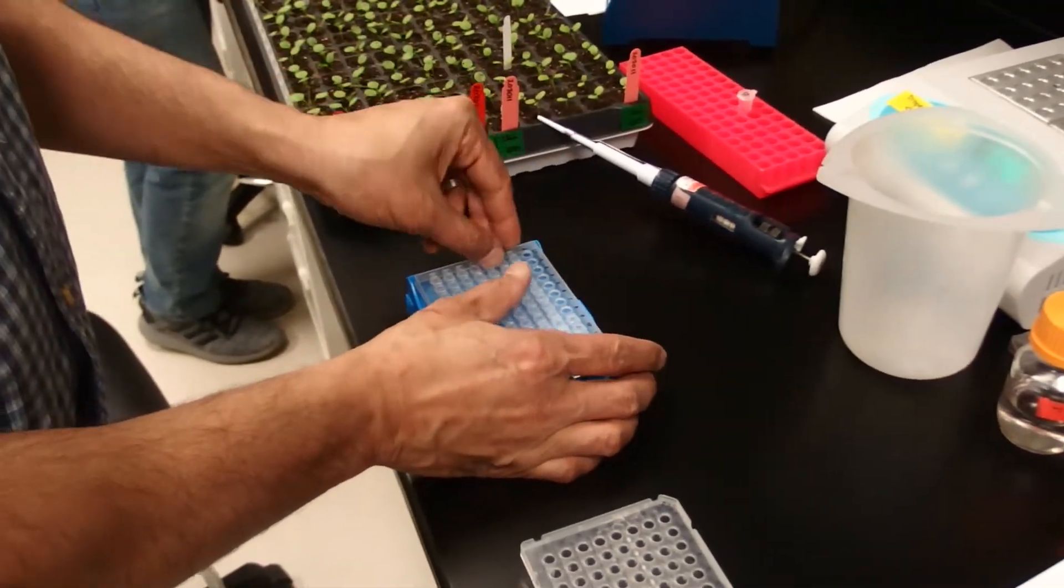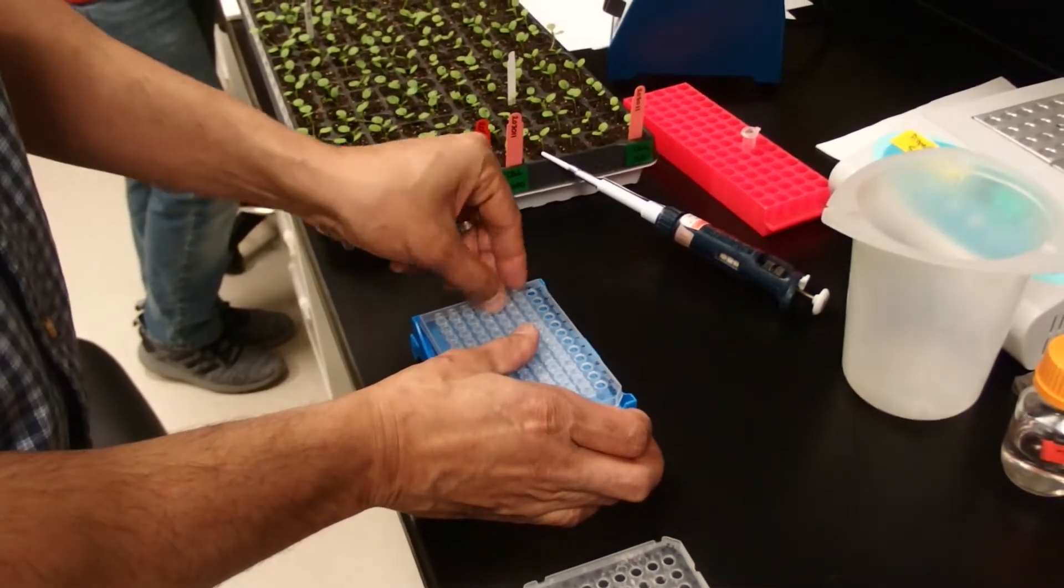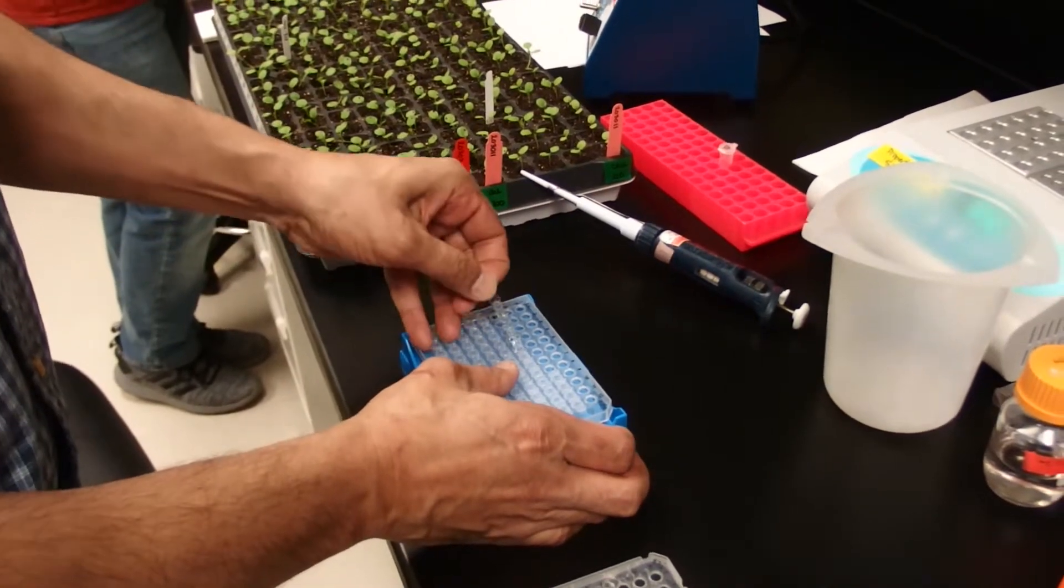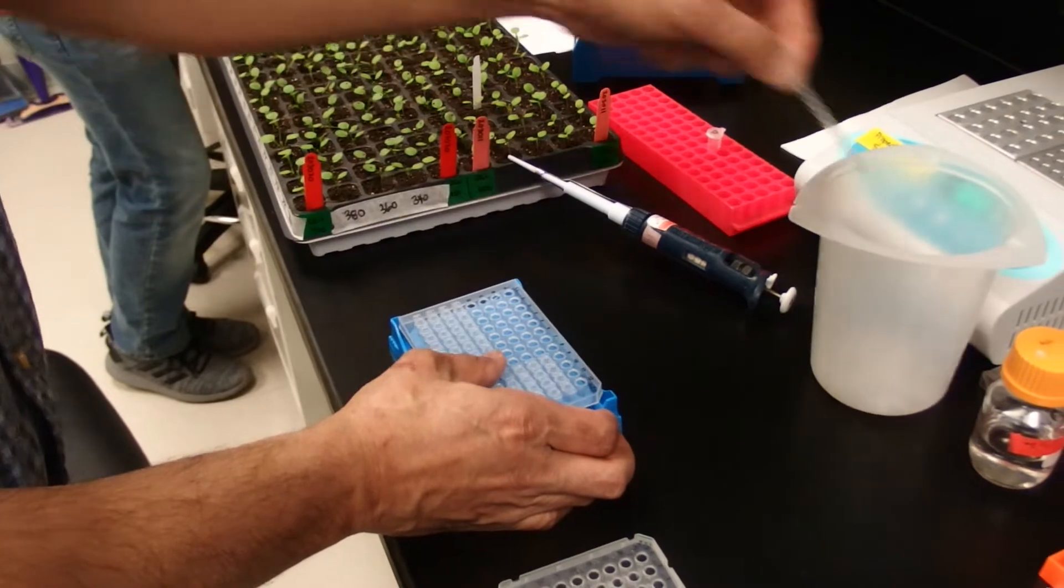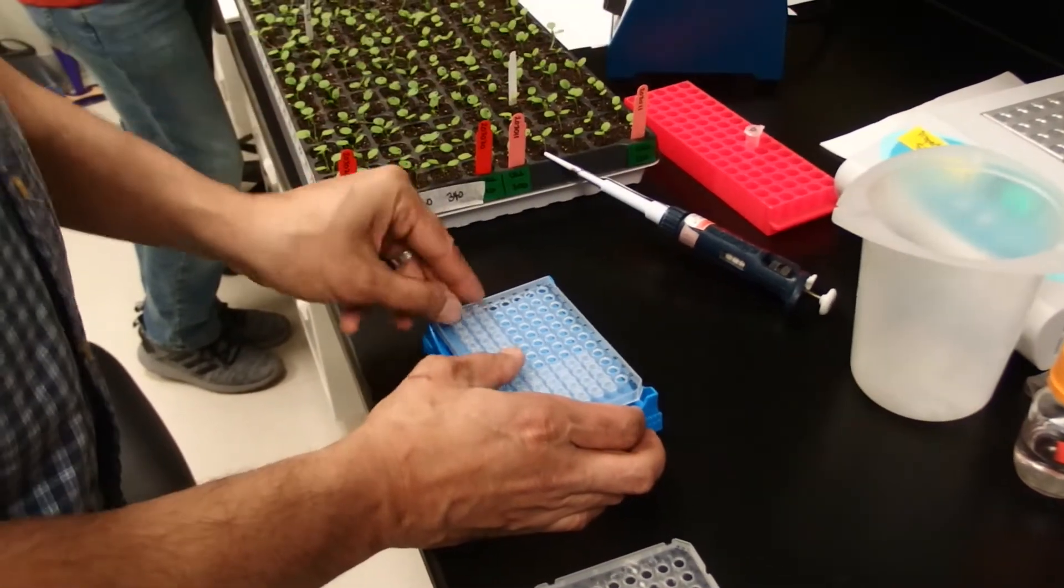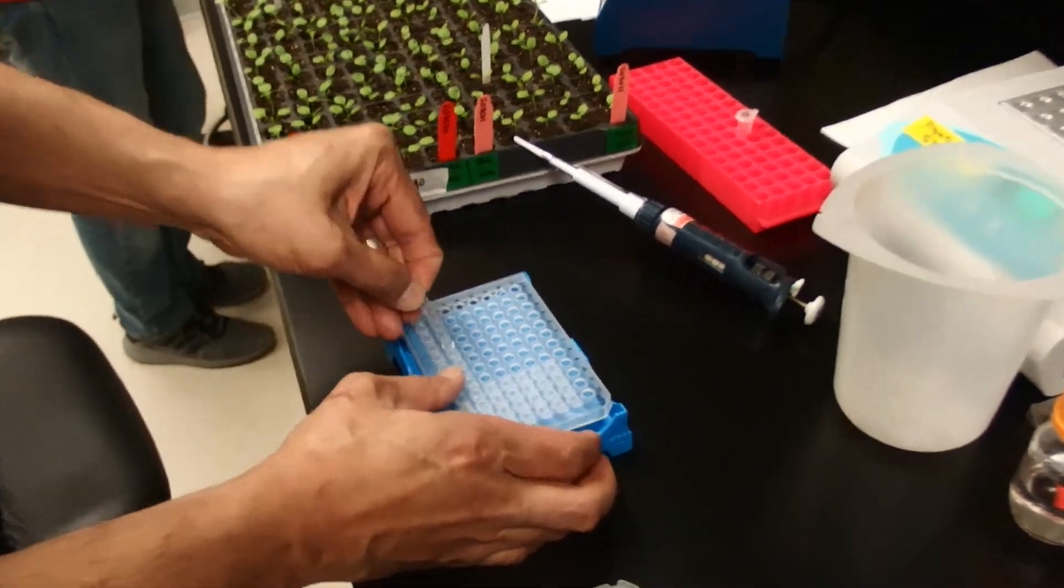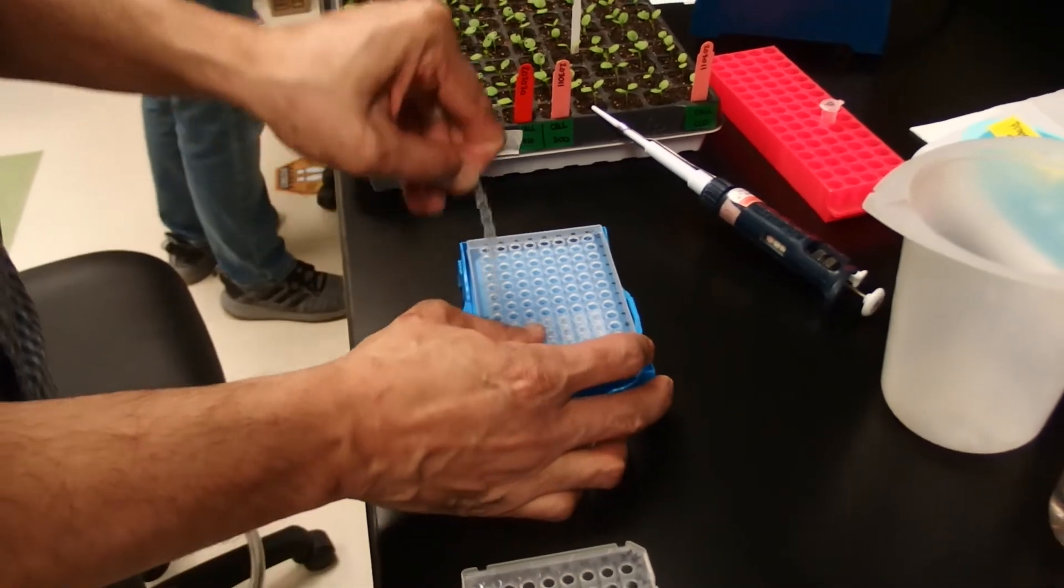They have been spun down already. We will save this and then put a tape over it which is a little easier to handle once you're in a plate format where you no longer really care about individual wells.